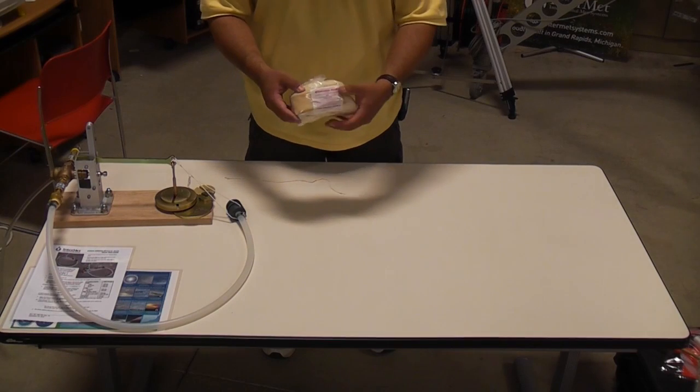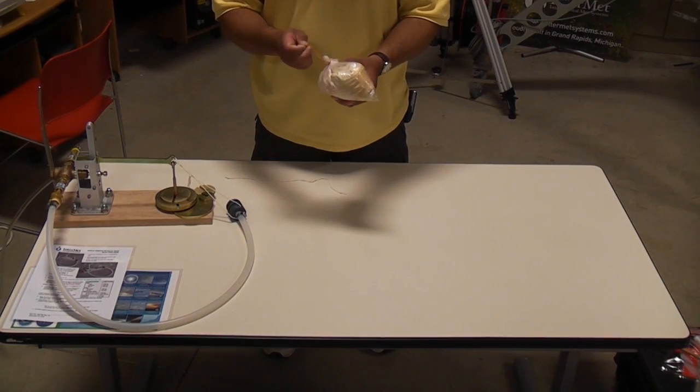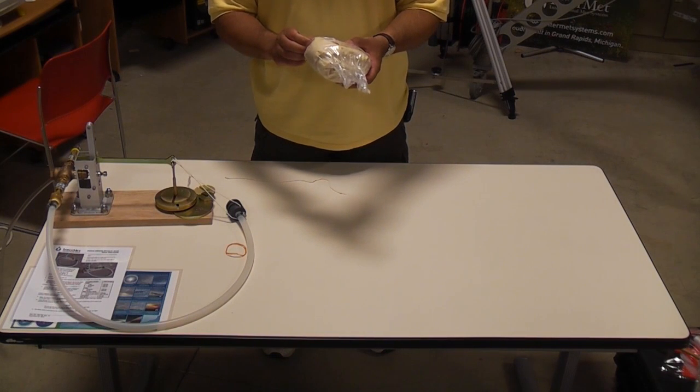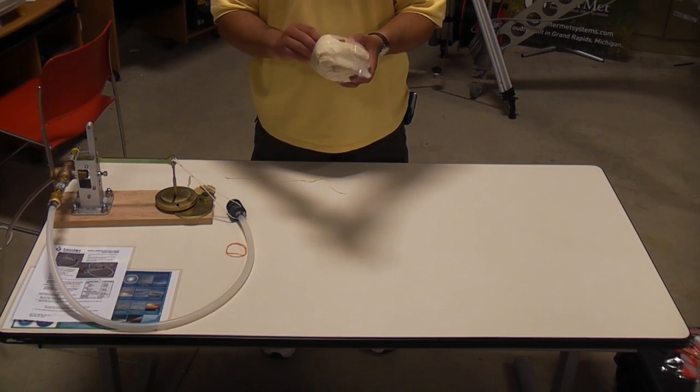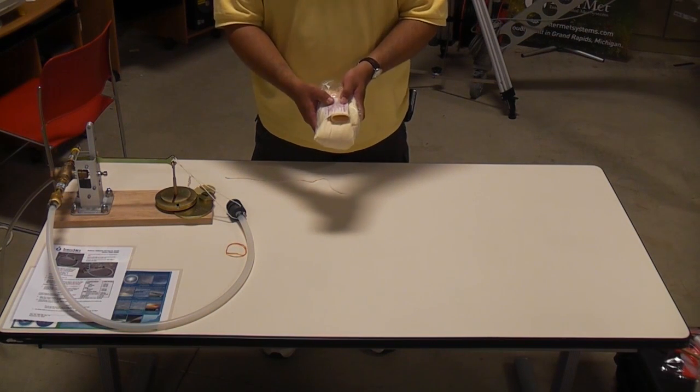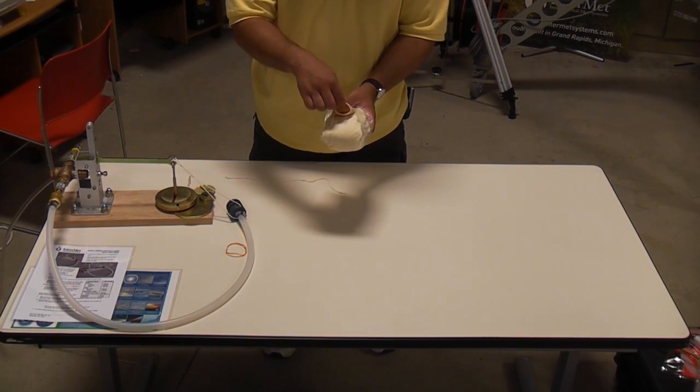Now I'm going to remove the balloon from the bag. I'll take the rubber band off. What I'm going to do is I'm going to hold the balloon, kind of pull on the bag until I get access to the neck of the balloon.